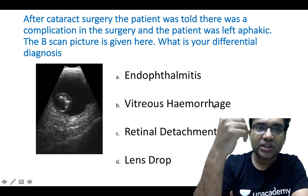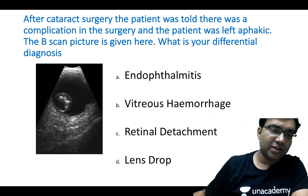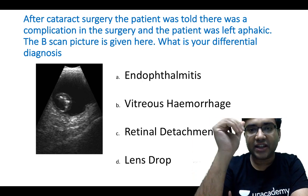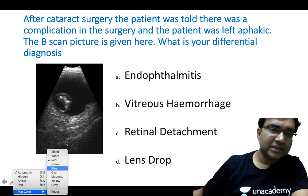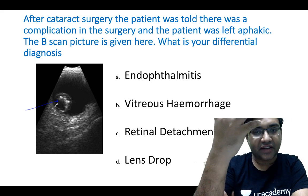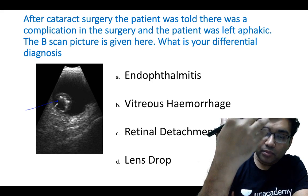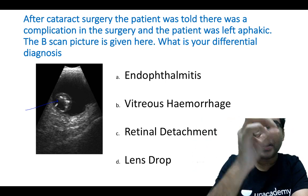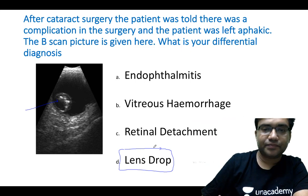Another question: after a cataract surgery the patient was left aphakic, meaning no intraocular lens was placed. Looking at the B-scan picture, you can see a nucleus sitting in the vitreous cavity. During cataract surgery, loss of ciliary zonules can cause the whole lens to drop into the vitreous cavity. This is a patient of lens drop or nucleus drop into the vitreous cavity.